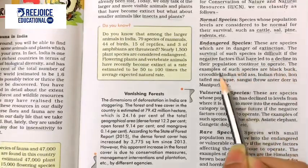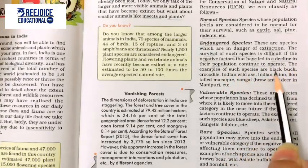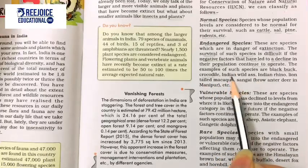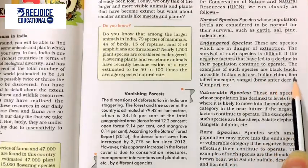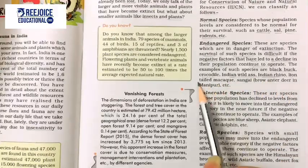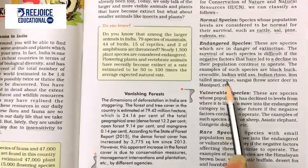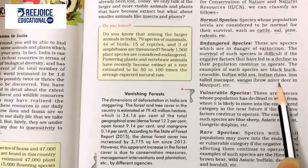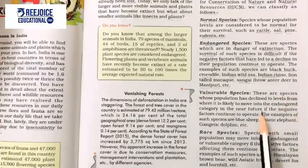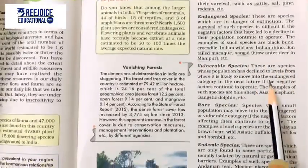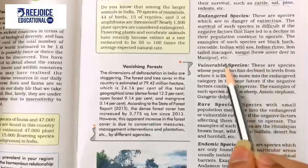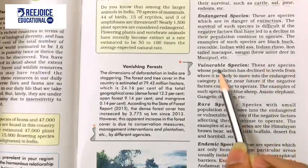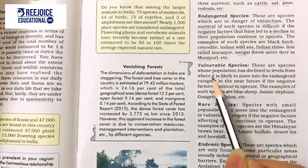Examples of endangered species are black buck, crocodile, Indian wild ass, Indian rhino, Indian lion-tailed macaque, lion-tailed macaque, and brow-antlered deer of Manipur. Next is Vulnerable Species — species whose population has declined to levels from where it is likely to move into the endangered category in the near future.